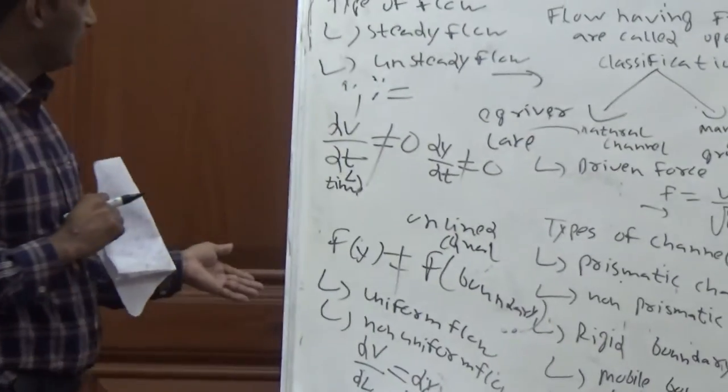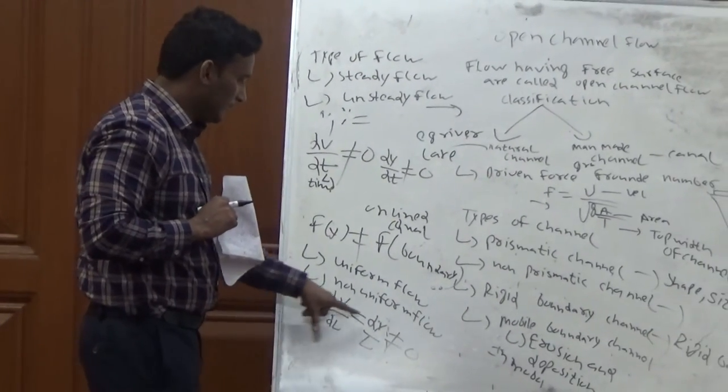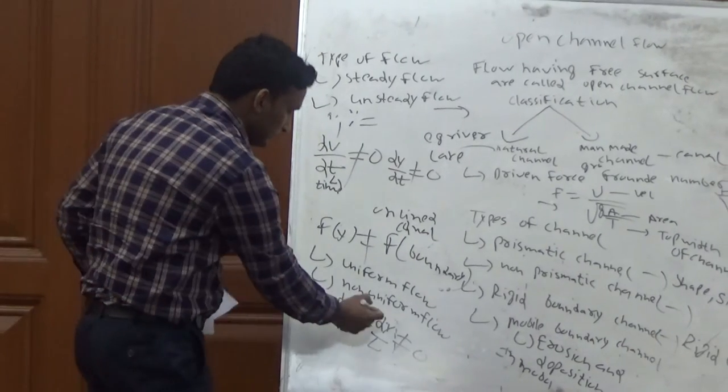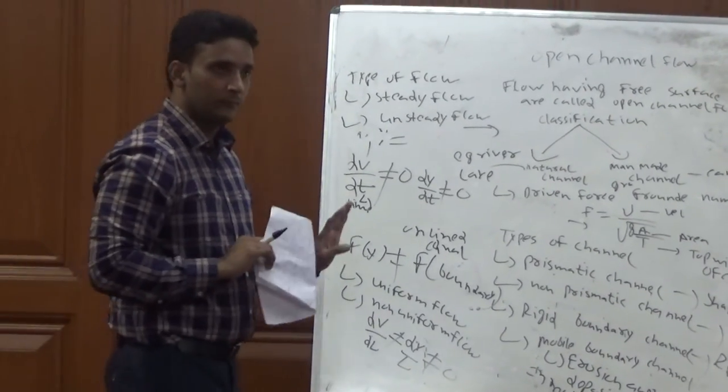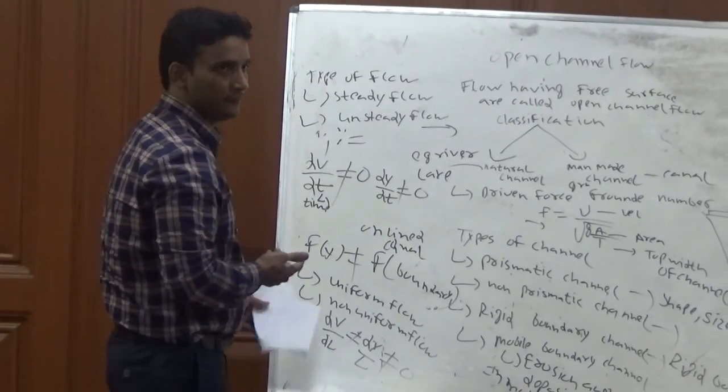This is the equation for non-uniform flow. These parameters are changing, meaning these values are not equal to zero. So this is my topic. Thank you.